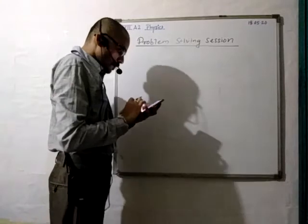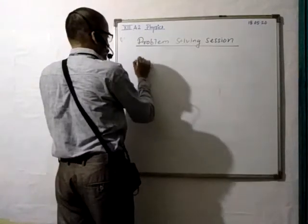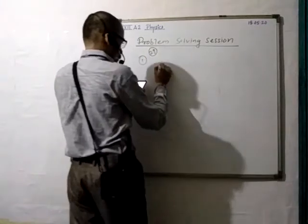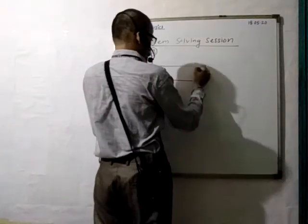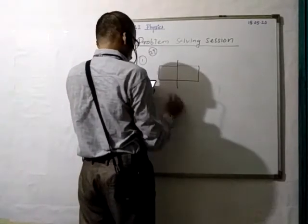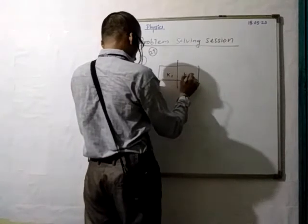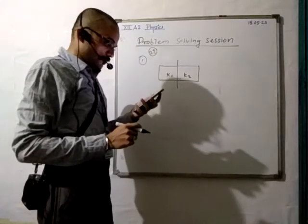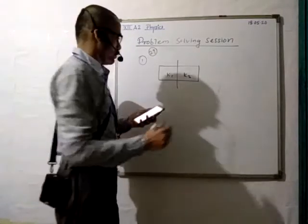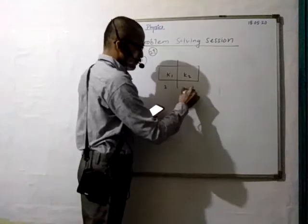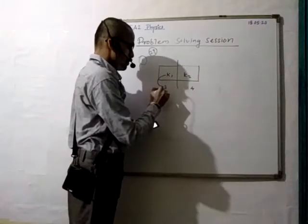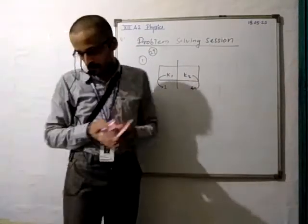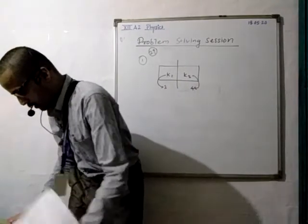A parallel plate capacitor with air medium between the plates has a capacitance of 10 microfarad. The area of the capacitor is divided into two equal halves, filled with two media having dielectric constants k1 and k2. k1 is equal to 2, k2 is equal to 4. The capacitance of the system — what is the capacitance of the system — is what they are asking.